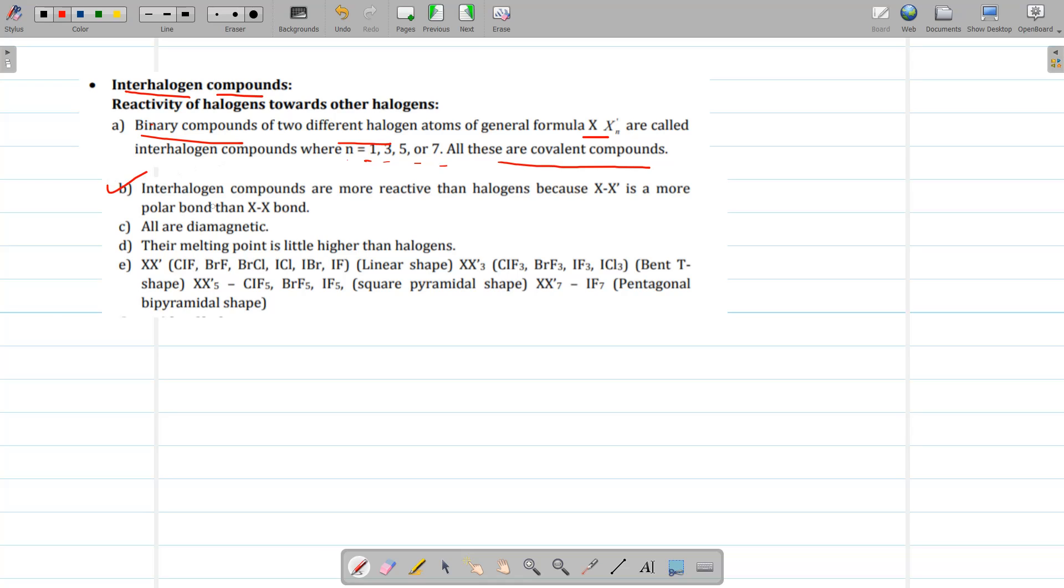Now, this is very important. Interhalogen compounds are more reactive than halogens. Why is it so? Because interhalogen compound the bond is more polar than XX bond. So they are more reactive and they are having more boiling point as compared to X2. And all are diamagnetic. Their melting point is little higher than that of halogens.